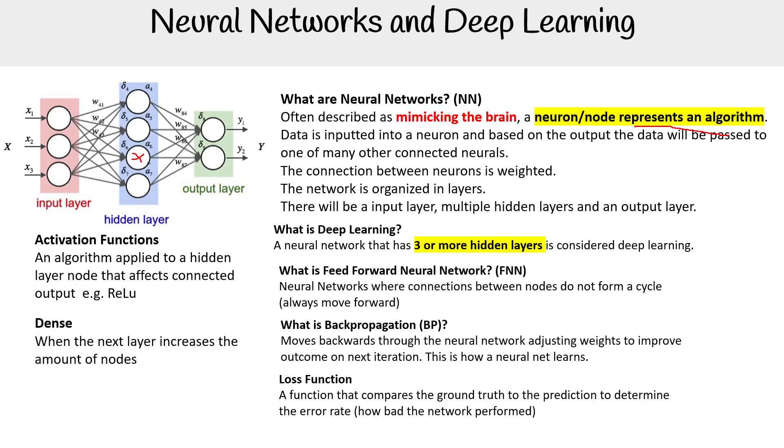There's the concept of dense. When the network layer increases the amount of nodes, we call it more dense. And when the layers decrease the amount of nodes, we call it sparse. So when we see increase, it's dense. If it's decreasing, it's sparse.